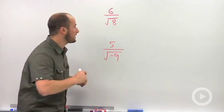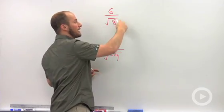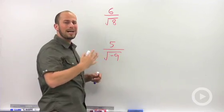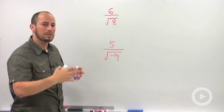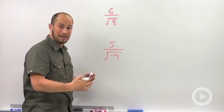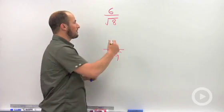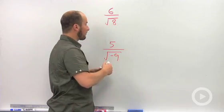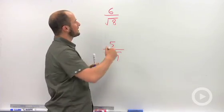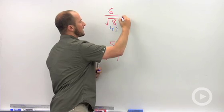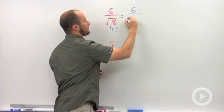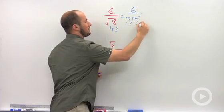There's two ways of doing it. You could multiply by root 8 over root 8 and get rid of that, or what I tend to do is I like dealing with smaller numbers, so if I can, I try to simplify that denominator first. I know that 8 is the same thing as 4 times 2.